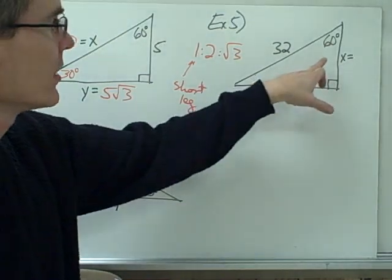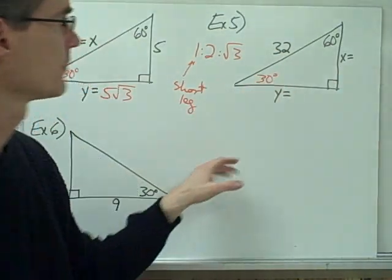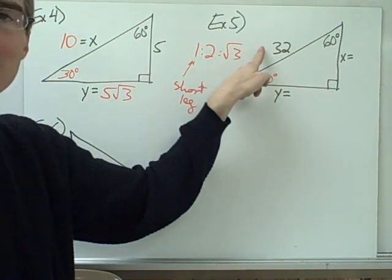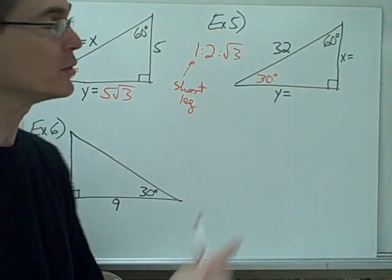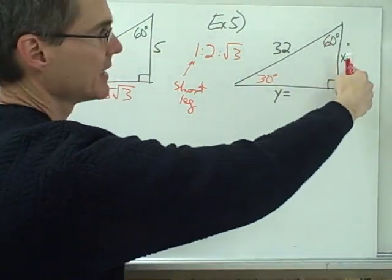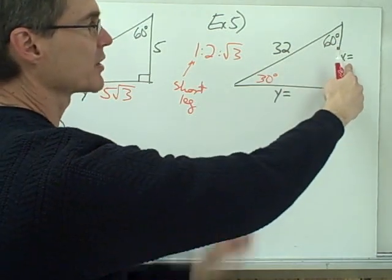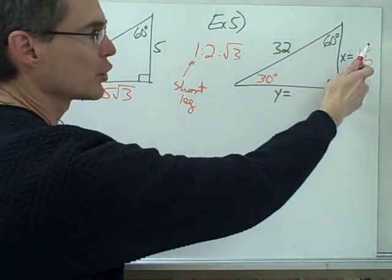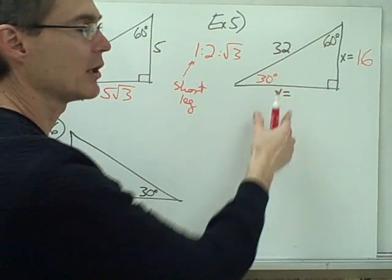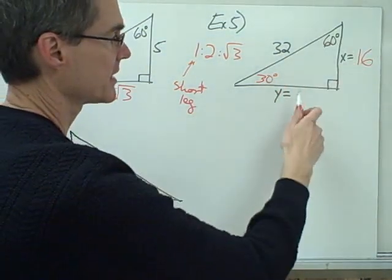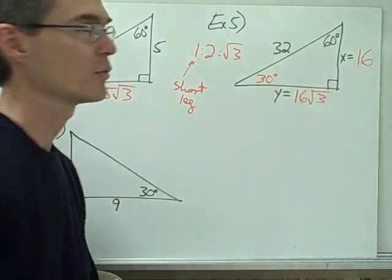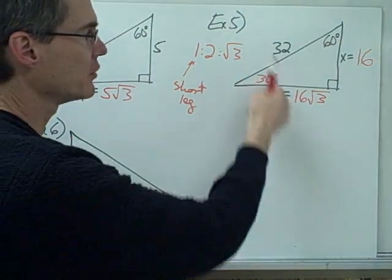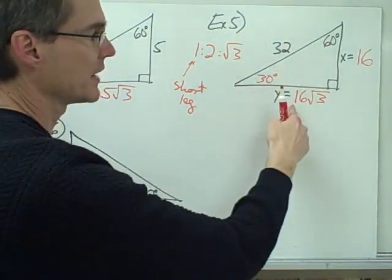Example 5: I have a 30-60-90 triangle but now I know the hypotenuse, not the short leg. The hypotenuse is 32. Since the hypotenuse is always twice the shortest leg, the short leg must be 16. Now that I know the short leg, the long leg is 16√3. So the three sides are 16, 32, and 16√3.